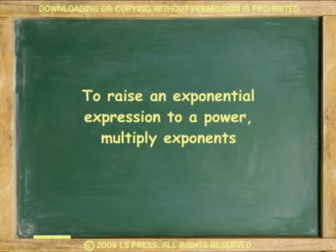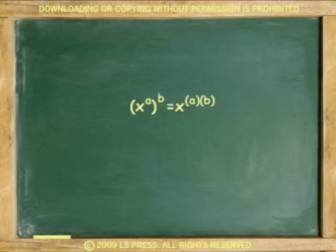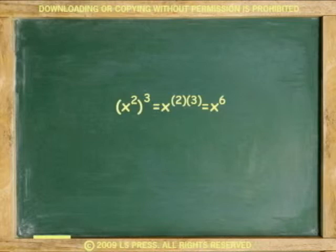This other rule about polynomials is important. To raise an exponential expression to a power, multiply exponents. For example, x to the a to the b is x to the a times b. Or x squared cubed is x to the 6.